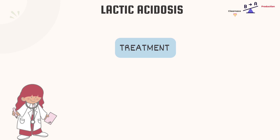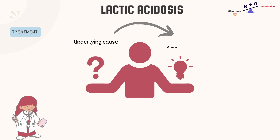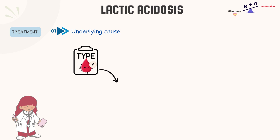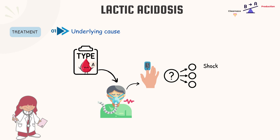Lactic acidosis is a serious medical condition that requires prompt and appropriate treatment. The key to successful treatment is addressing the underlying cause and stabilizing the patient's acid-base balance. In type A lactic acidosis, where inadequate oxygenation is the problem, the primary focus is on improving oxygen delivery to tissues. This may involve treating conditions like shock, severe heart or lung disease, or restoring proper oxygen levels.